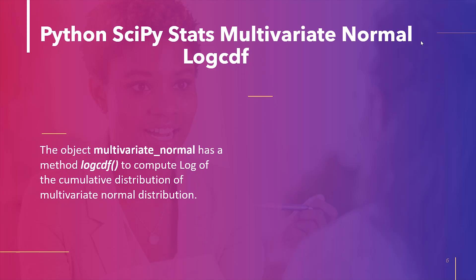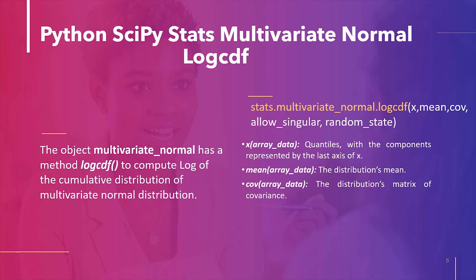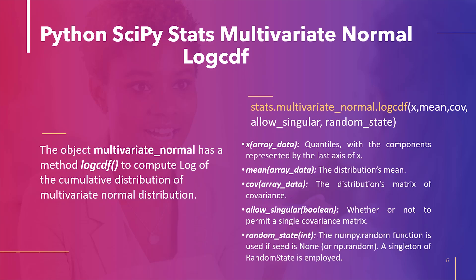The next topic is Python SciPy stats multivariate normal log CDF. The log normal distribution CDF function gives the likelihood that an observation from a log normal distribution with a log scale parameter and shape parameter is less than or equal to x. The same concept applies to a multivariate normal distribution. The log of the cumulative distribution of the multivariate normal distribution is computed using the method log_cdf of the object multivariate_normal. Parameters include: x representing quantiles (last axis denoting components), mean, cov (covariance matrix), allow_singular, and random_state.